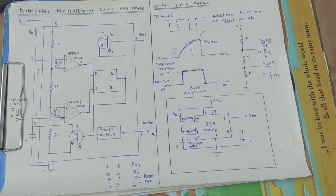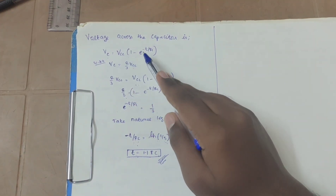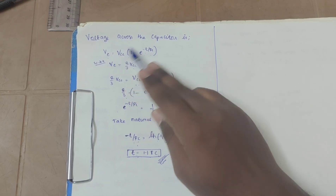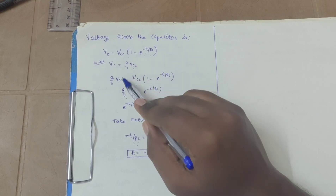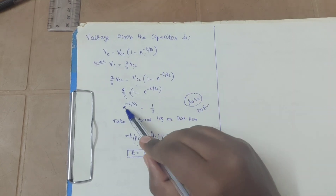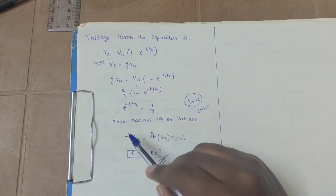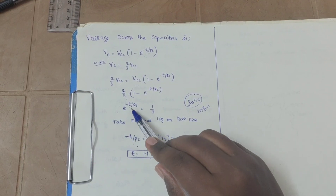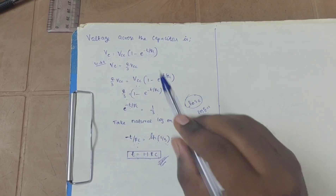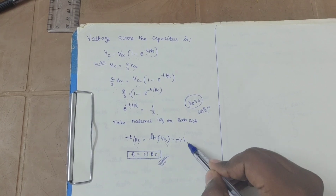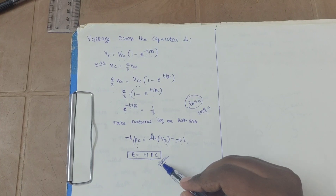Now we have to see the time derivation formula. The voltage of capacitor formula is: V equals Vcc into (1 minus e to the power of minus t by RC). This is the general formula. The voltage of the capacitor is 2/3 Vcc. After canceling Vcc, it becomes 2/3 equals 1 minus e to the power of minus t by RC. So e to the power minus t by RC equals 1/3. Taking natural log on both sides: minus t by RC equals log(1/3), and log(1/3) value is minus 1.1. So minus and minus cancel, and t becomes equal to 1.1 RC. This is the time equation.